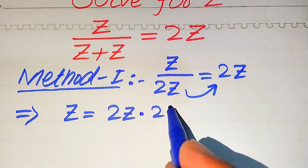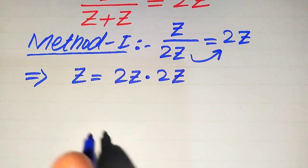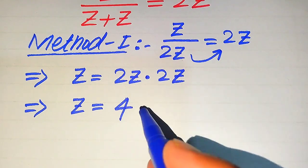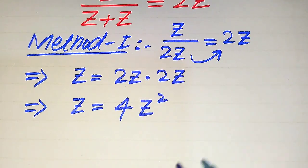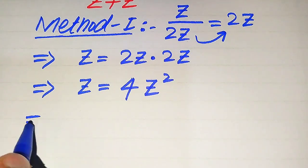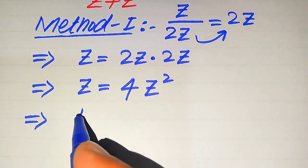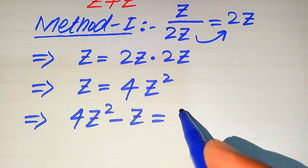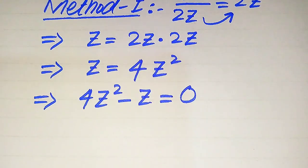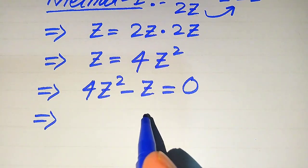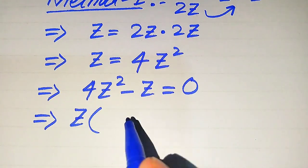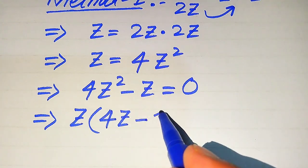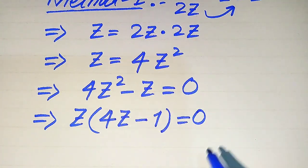In the next step, z equals two times two which becomes four, and z times z becomes z squared. Our target is to find the values of z, so we move this z to the right hand side. It is written as four times z squared minus z equals zero.